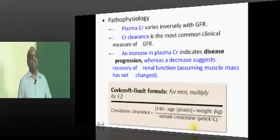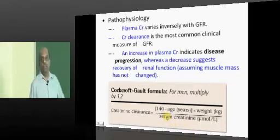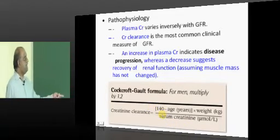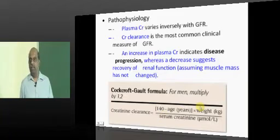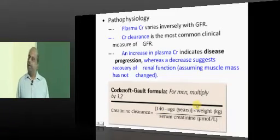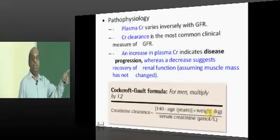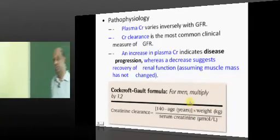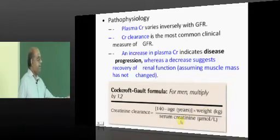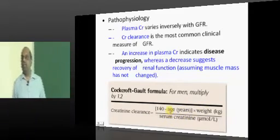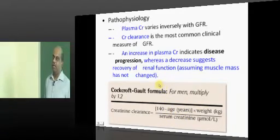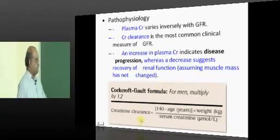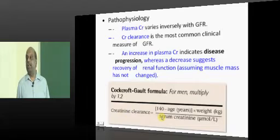The Cockcroft-Gault formula: 140 minus age in years. Let us say a 50-year-old man weighing 70 kg. 140 minus 50 equals 90. 90 multiplied by his weight of 70 kg gives 6300. Divided by his serum creatinine — let us say 1.5 — gives 6300 divided by 1.5. That is how you calculate the creatinine clearance.